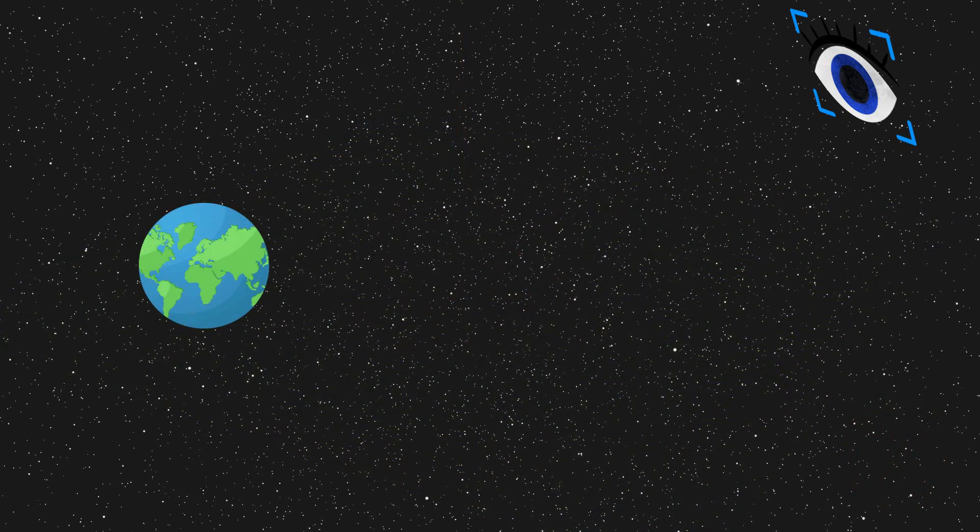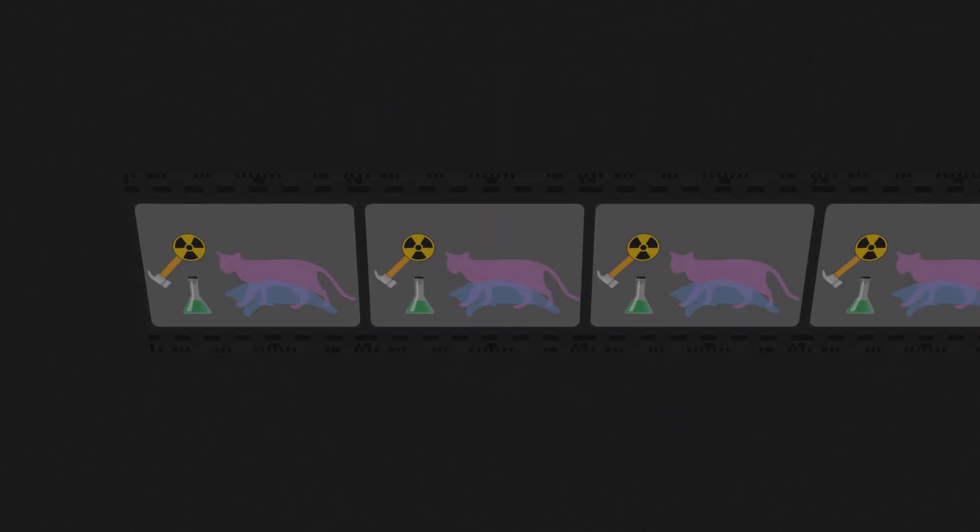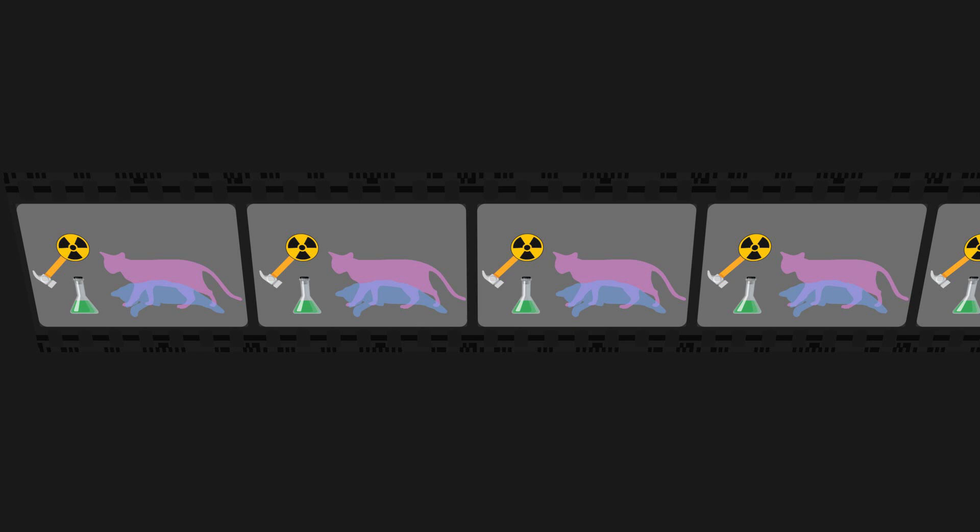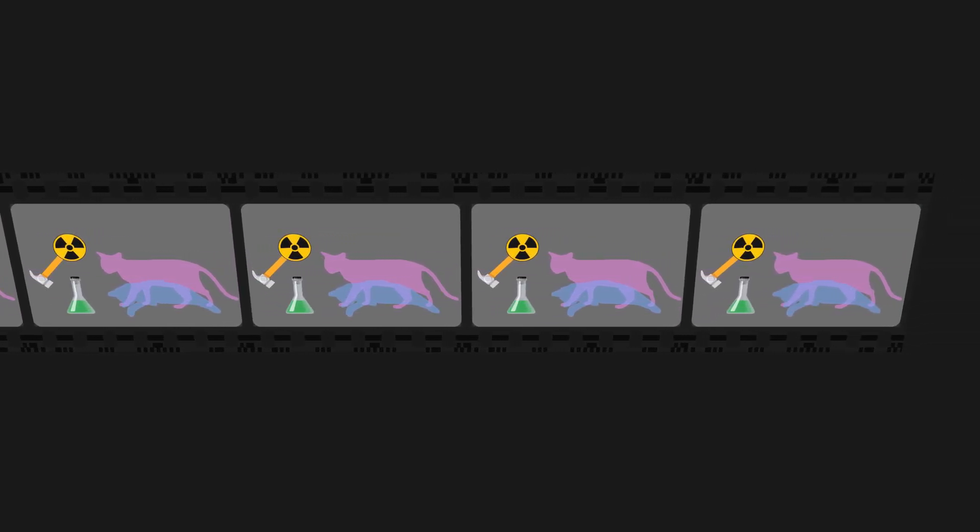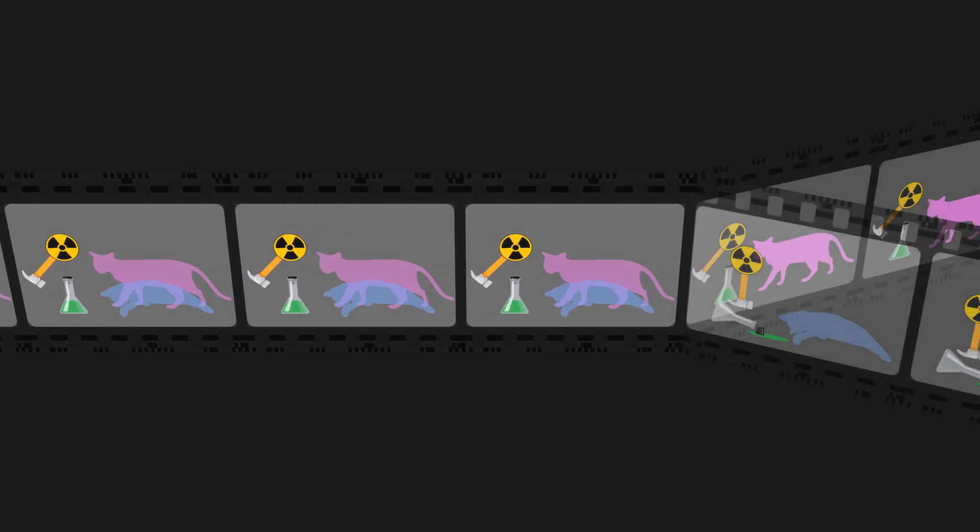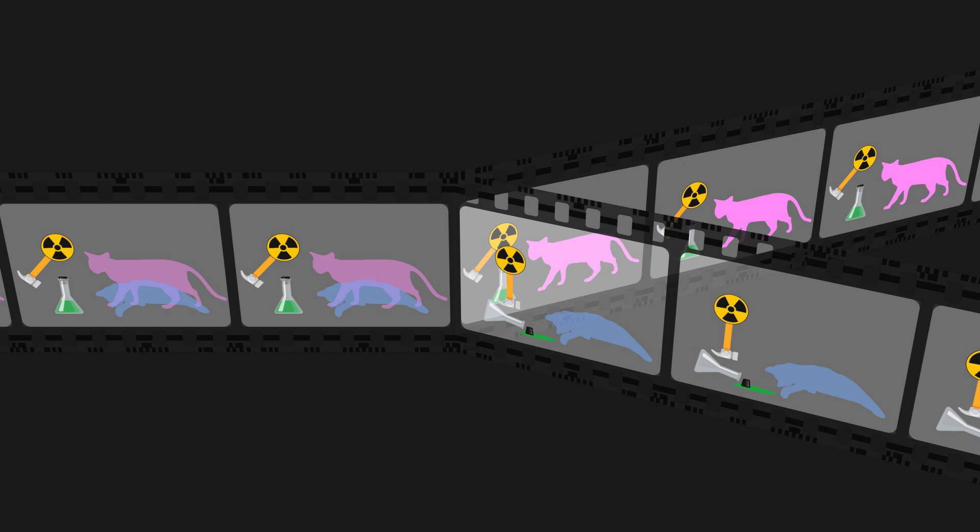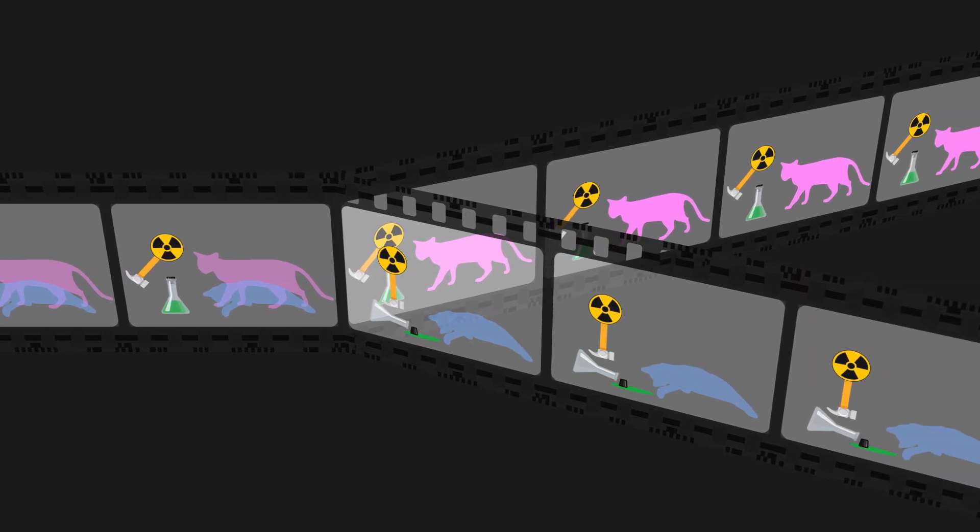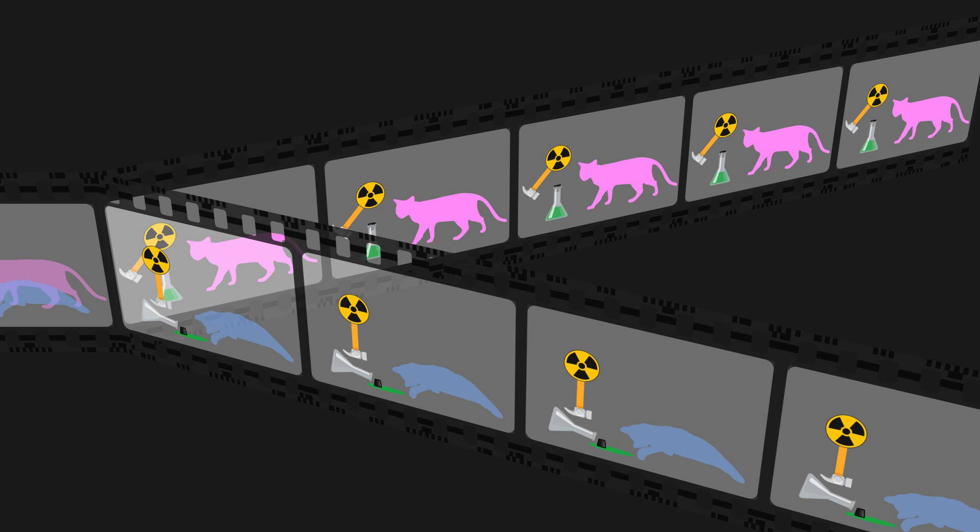When an observation is made, the universe splits into multiple branches, with each branch representing a different possible outcome. In the example of Schrödinger's cat, before the box is opened, the cat exists in a superposition state, both alive and dead. When the box is opened and an observation is made, the universe branches into two parallel universes. In one universe, the observer would find the cat alive. In the other universe, the observer would find the cat dead.